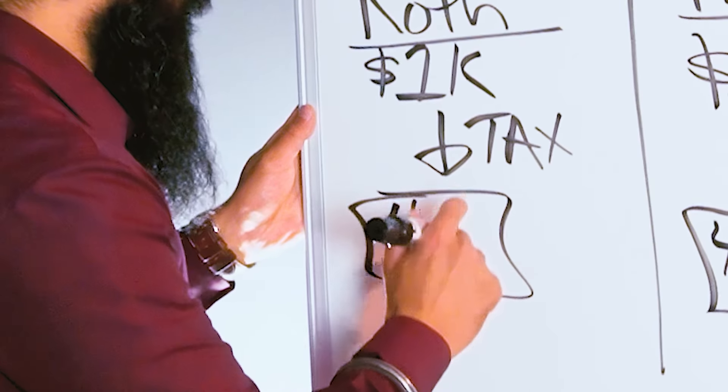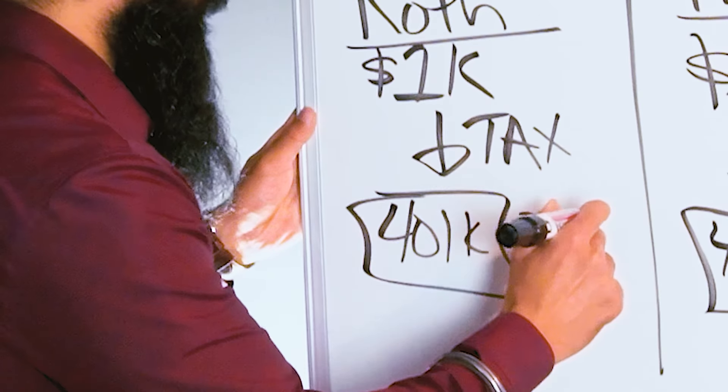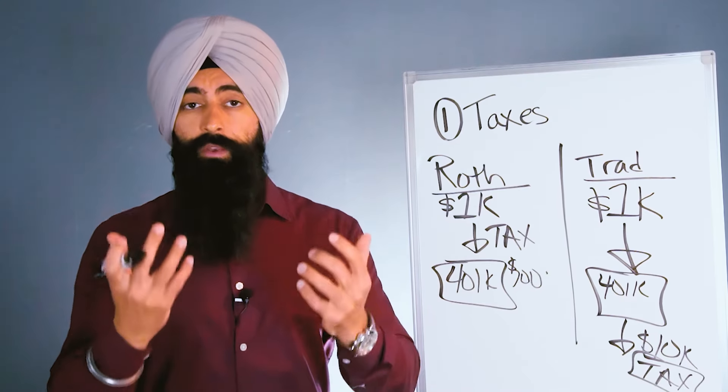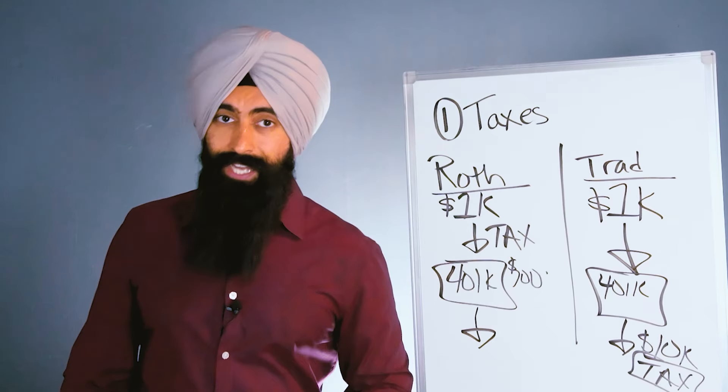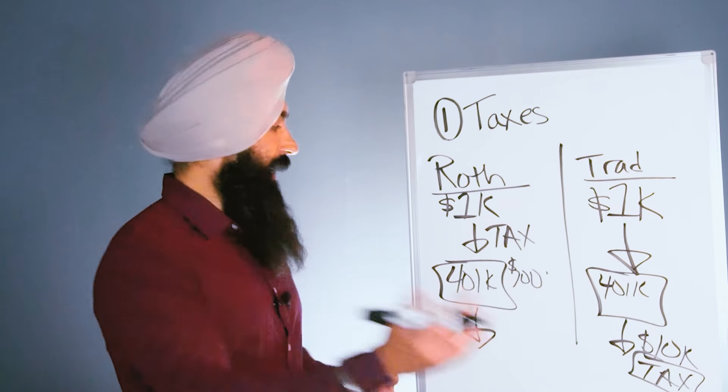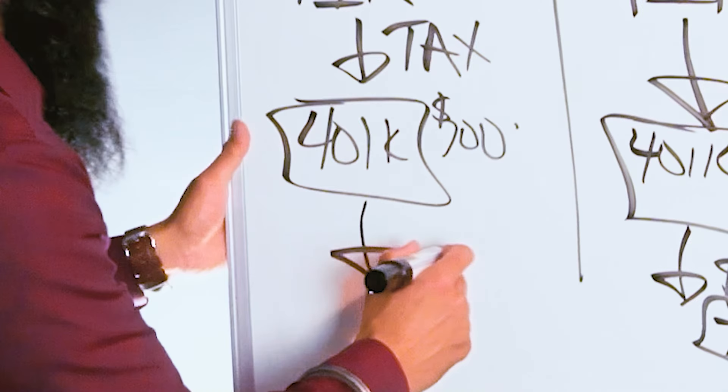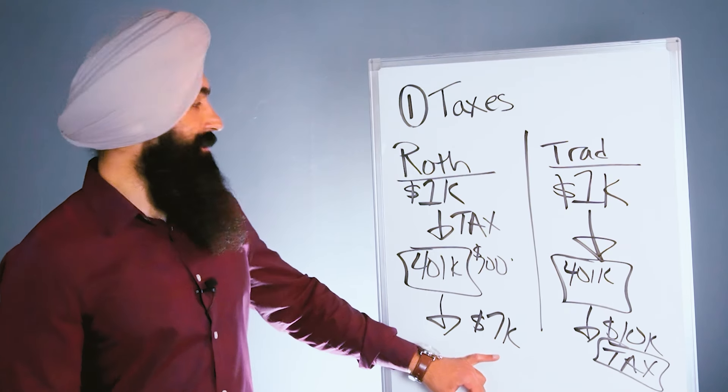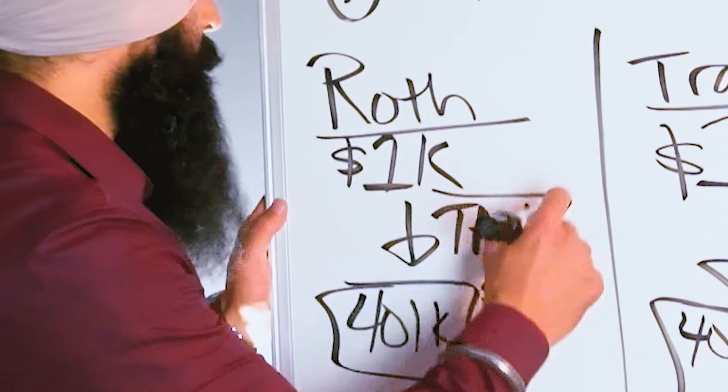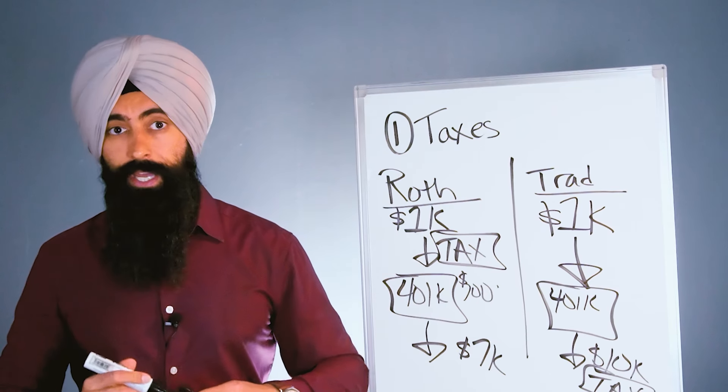So you have less money working for you, but then when you go to pull this money out, you don't have to pay any taxes. If the $700 grows to $7,000, you don't have to pay taxes on the $7,000 because you paid taxes before the money went into the 401k.